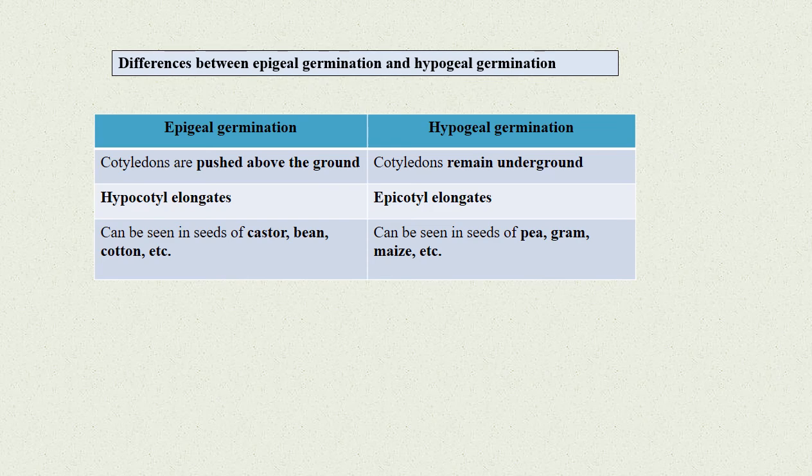Epigeal germination can be seen in seeds of castor, bean, cotton, etc.